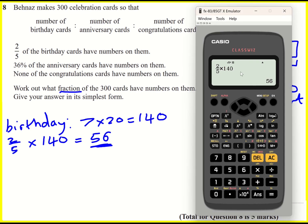You can alternatively do this. So get your fraction button. Two-fifths times 140 will give you 56 if you want.